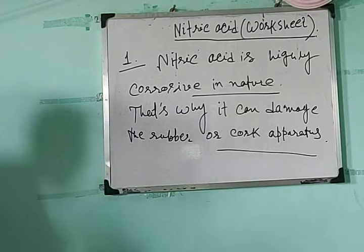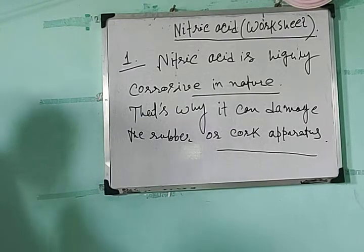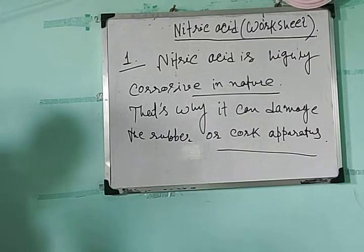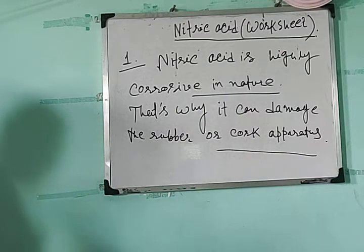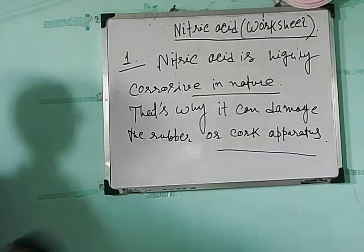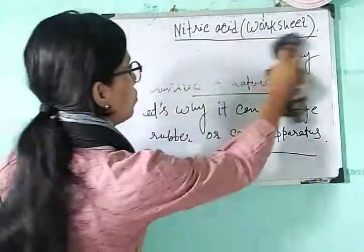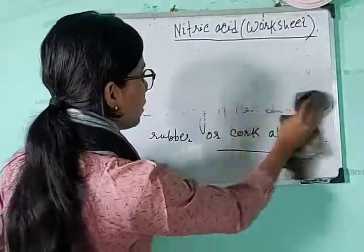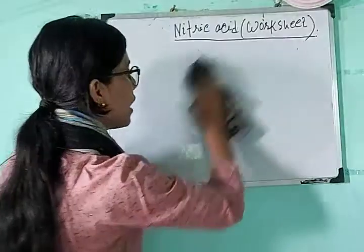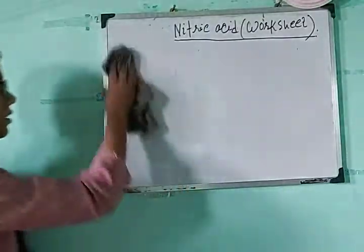Question number two: the molar ratio of nitric acid and sulfuric acid is taken as 1:1, although sulfuric acid is a dibasic acid. Explain. The question is saying that sulfuric acid is a dibasic acid.